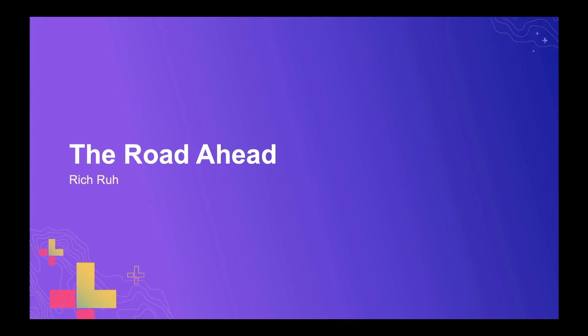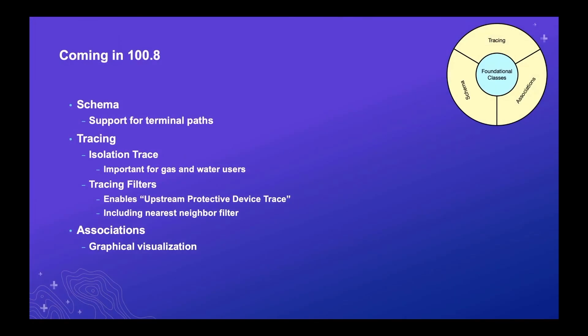Let's wrap up by talking about the road ahead for the Utility Network APIs in future releases. Coming in 100.8, we're adding support for terminal paths to the schema classes. On the tracing side, we are adding support for the isolation trace — very important for gas and water users to perform a valve isolation trace to find which valves to close to stop the flow of gas or water to a particular location. We're also supporting tracing filters, enabling business processes like the upstream protective device trace and the nearest neighbor filter. On the association side, we're providing graphical visualization so you can see lines on your map connecting features linked by a connectivity or structural attachment association.